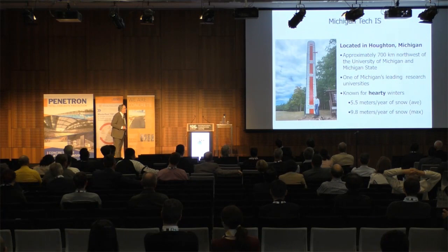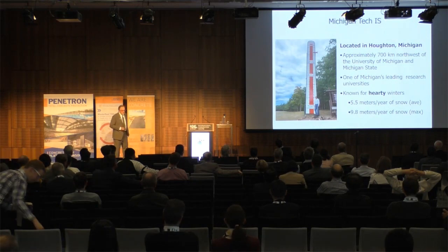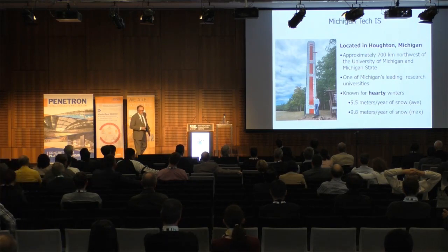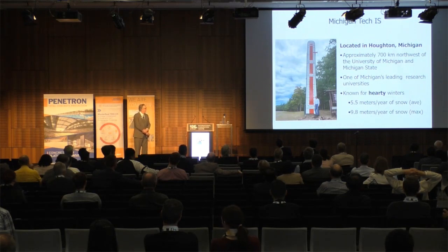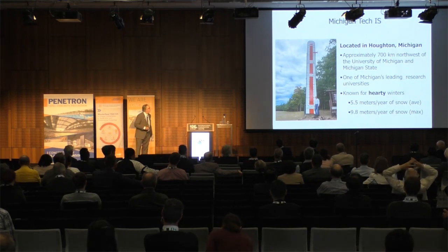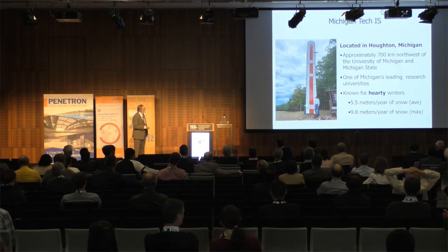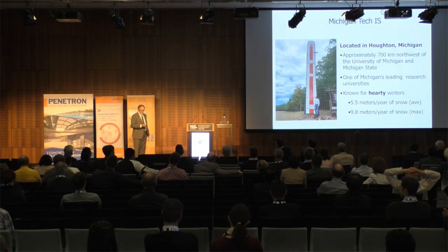So who is Michigan Tech? We're located in Houghton, Michigan, about 700 kilometers northwest of where Michigan and Michigan State are. It's one of Michigan's leading research universities, but we're primarily known for hardy winters. We get on average about five and a half meters of snow a year. The record year is 9.8 meters — and that was the year I moved there. We don't get it all at one time, but we get it over the course of a year.